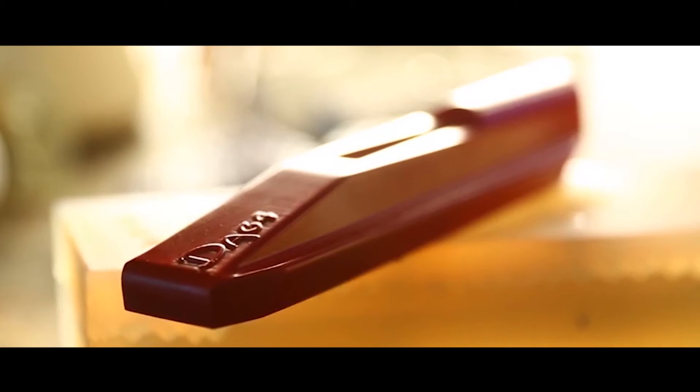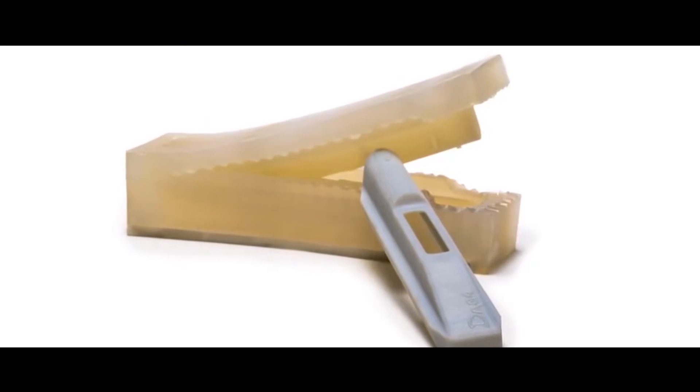Using PolyJet as the pattern maker, silicone molds can be ready to cast parts in just one or two days.